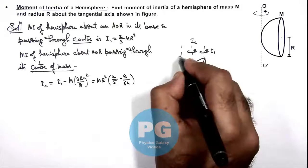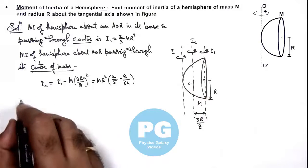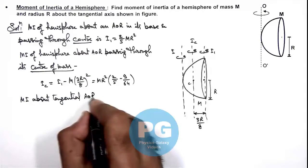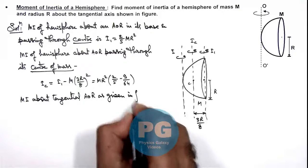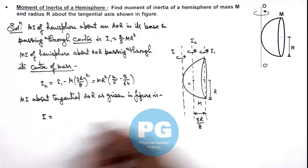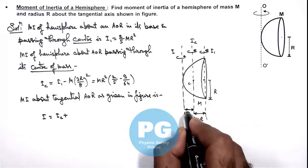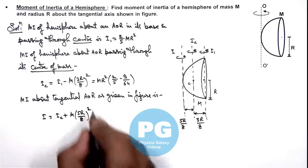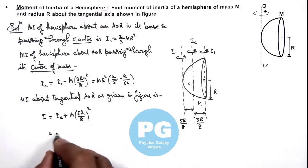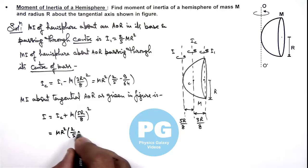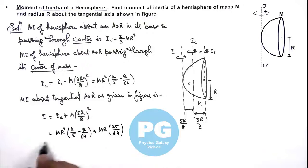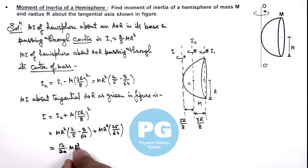Now that we have the value of Ic, we can calculate the moment of inertia I about the tangential axis of rotation as given in the figure. Using the parallel axis theorem again, I = Ic + md², where the distance is r − 3r/8 = 5r/8. Substituting the value of Ic, this gives us mr²(2/5 − 9/64) + mr²(25/64). Simplifying this relation, we finally get (13/20)mr², which is the result of this problem.